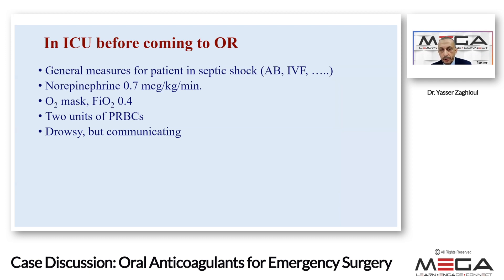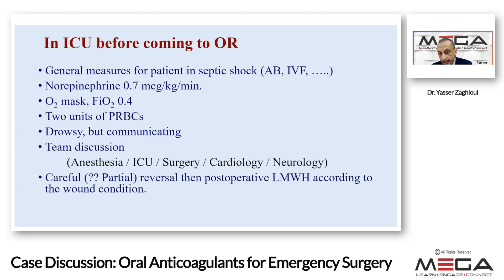We saw the patient in the ICU. General measures for septic shock were initiated: early antibiotics, IV fluid resuscitation, and norepinephrine started at 0.7 mcg/kg/min. She remained on an oxygen mask at 40%, satisfactory given her hemoglobin of 78 — one unit of blood was given and a second was running. She was still drowsy but communicating. Given the high-risk nature, we held a team discussion involving anesthesia, ICU, surgery, cardiology, and neurology about how and when to reverse the oral anticoagulant. Neurology was included because of her two prior TIAs — stopping anticoagulation carries a stroke risk.